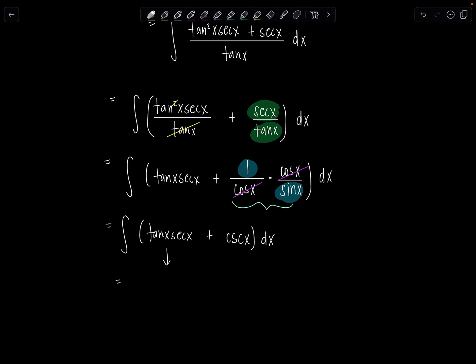And then now we can bring it on home. So antiderivative of tangent x secant x is just secant x. I'll use minus natural log absolute value cosecant x plus cotangent x. And then don't forget, plus c.